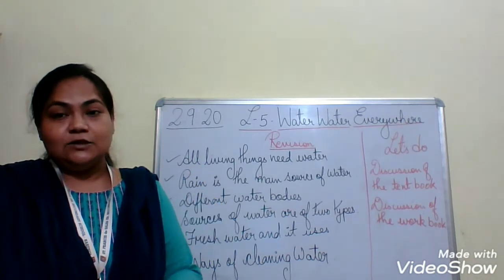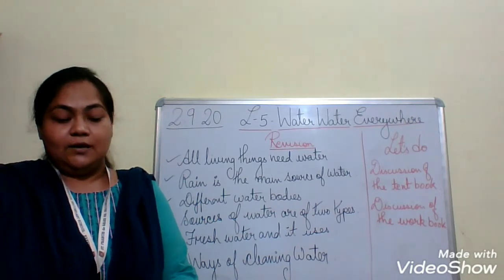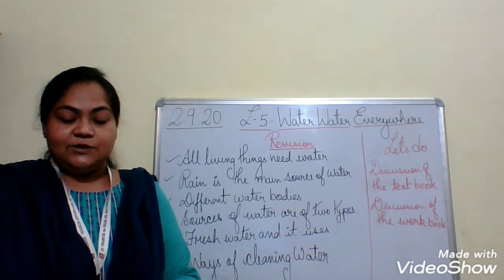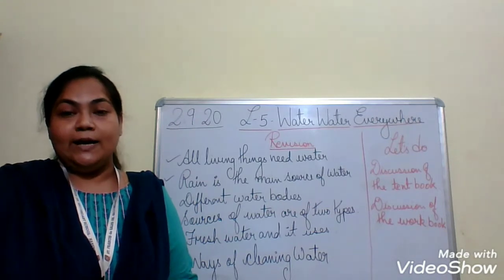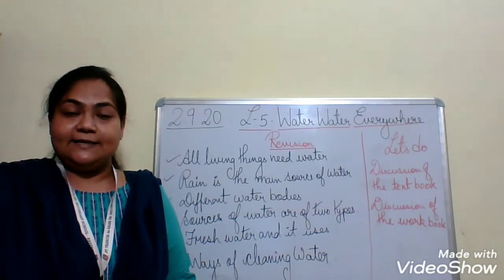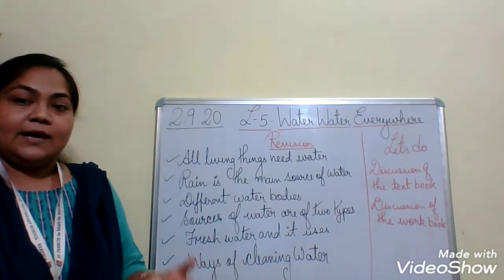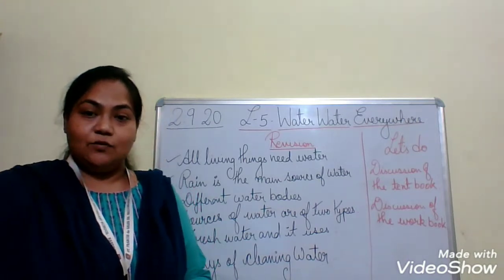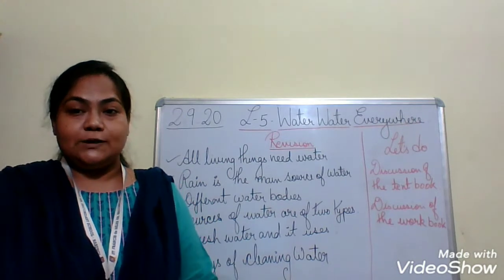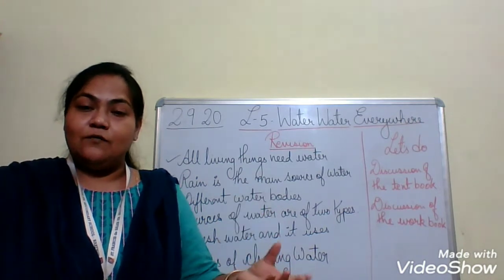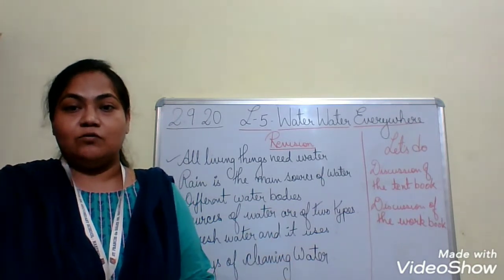Under natural sources you can see rain, river, pond, lake, ocean, seas, and spring. And in the man-made or artificial sources you can see well, bore well, and tube well. To get water from wells, bore wells, and tube wells, you have to dig the ground. And from where does the ground get water? From the rain. So we say that rain is the main source of water. When it rains, water bodies get filled up and water also goes into the ground.